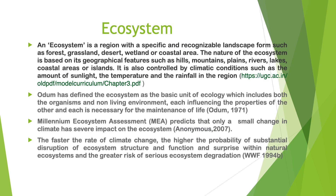Ecosystem: An ecosystem is a region with a specific and recognizable landscape form such as forest, grassland, desert, wetland or coastal area. The nature of the ecosystem is based on its geographical features such as hills, mountains, plains, rivers, lakes, coastal areas or islands. It is also controlled by climatic conditions such as the amount of sunlight, the temperature and the rainfall in the region.